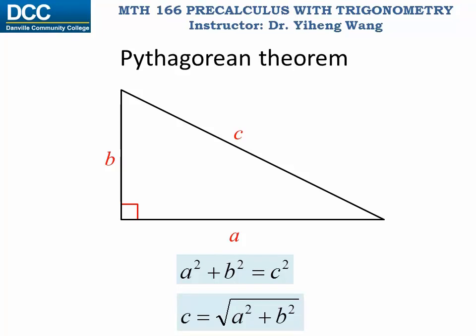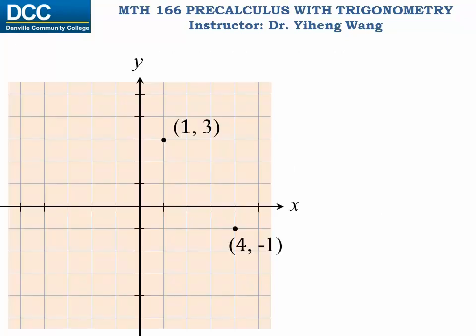We will use this conclusion to derive the distance formula. So for these two points, we can draw a right triangle to connect them. Again, the two perpendicular sides have lengths of a and b, but the length of the hypotenuse side is the distance that we wish to find.